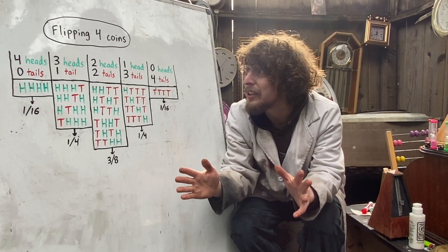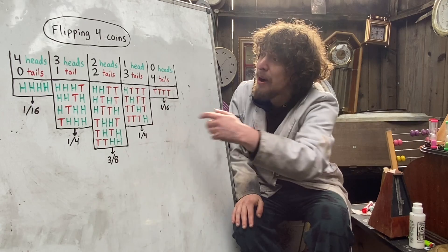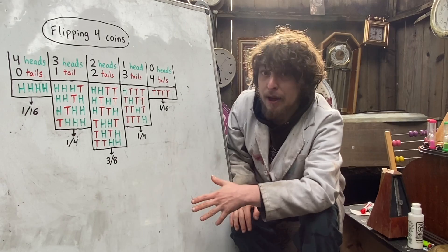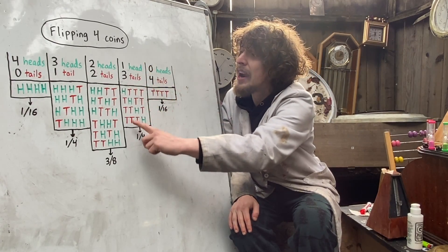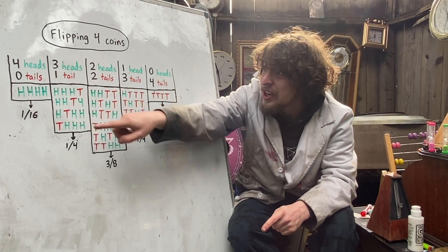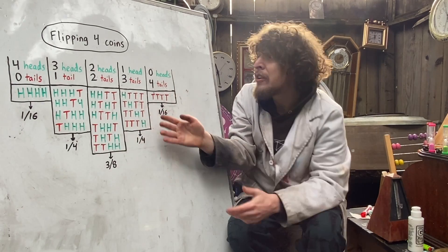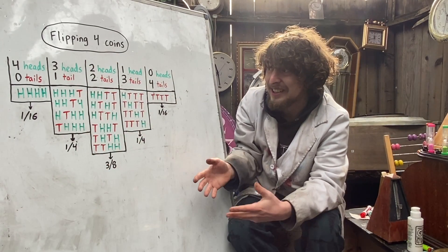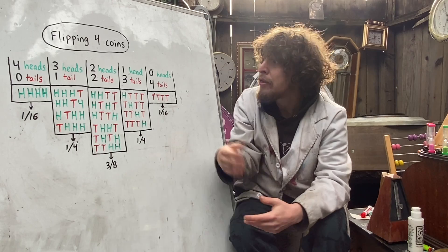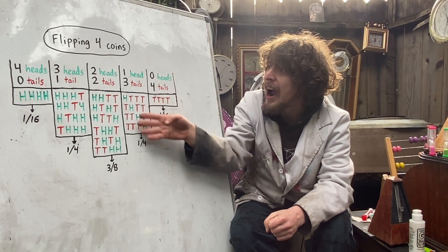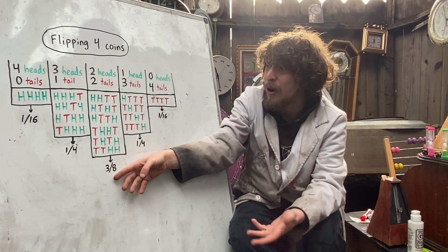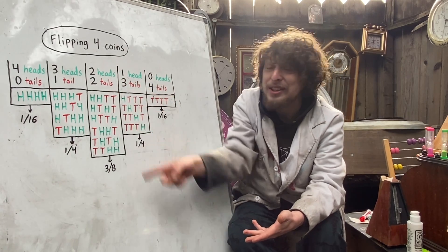But the question was: what's more likely — getting two heads and two tails, or getting three of one type and one of another type? That includes the three-tails-and-one-head options and the three-heads-and-one-tail options. If you add those up, you end up with eight out of the 16 total possibilities — actually a one-half chance altogether — that you end up with three of one kind and one of the other, compared to less than a one-half chance of getting the two heads and two tails.